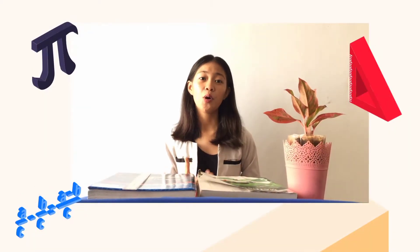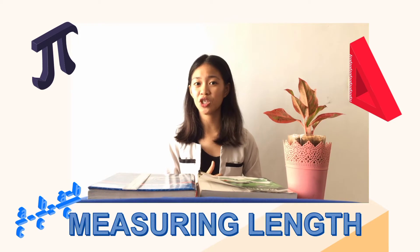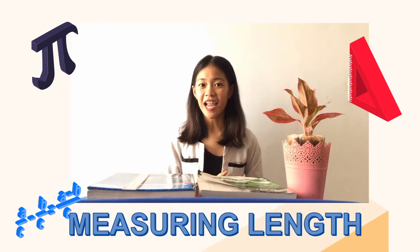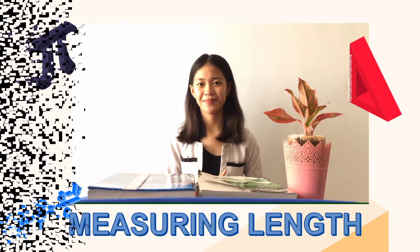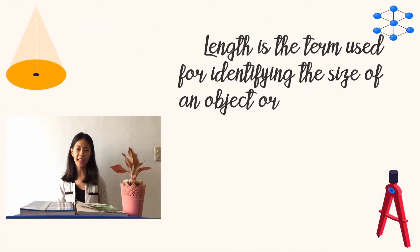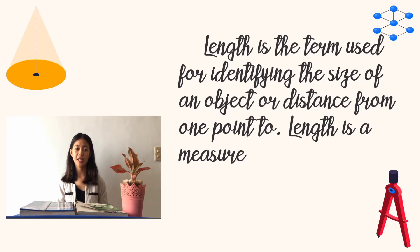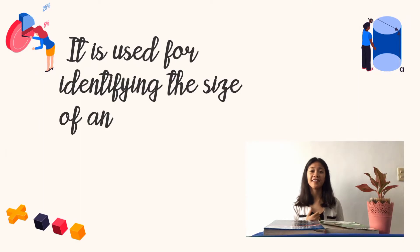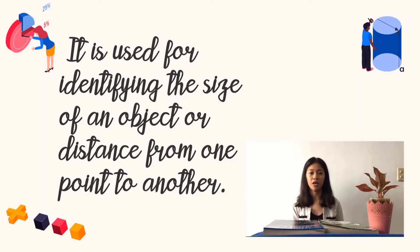So now, we will talk about measuring length as a continuation of our topic in the first video. But for that, let us first define what length is. Length is the term used for identifying the size of an object or distance from one point to another. Length is a measure of how long an object is or the distance between two points.